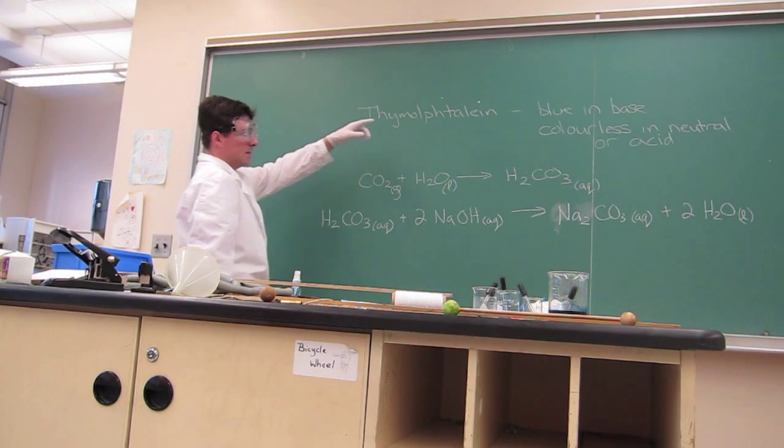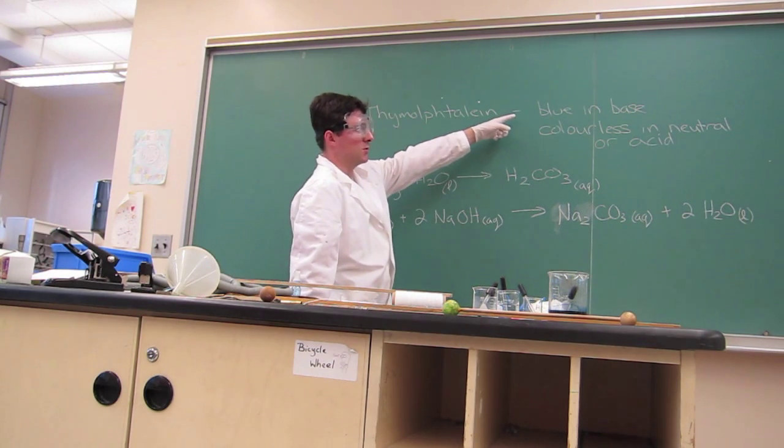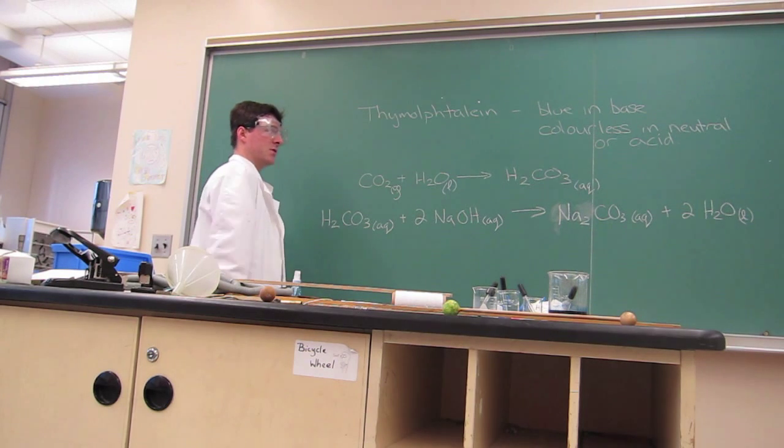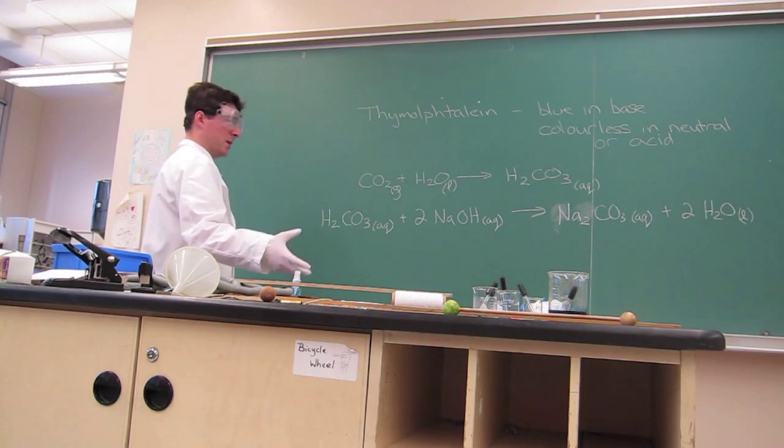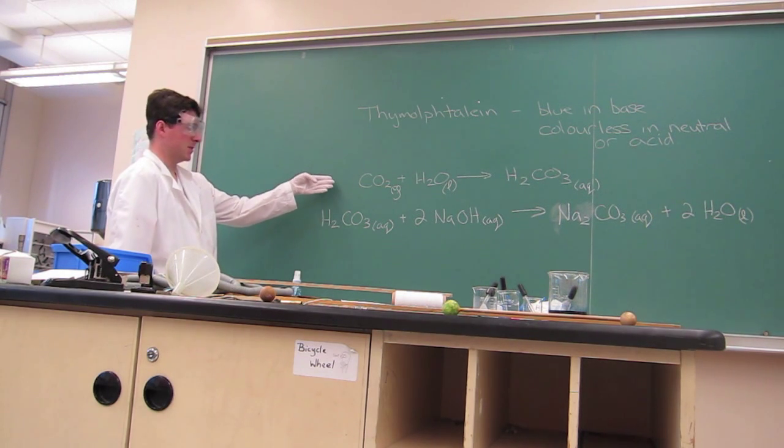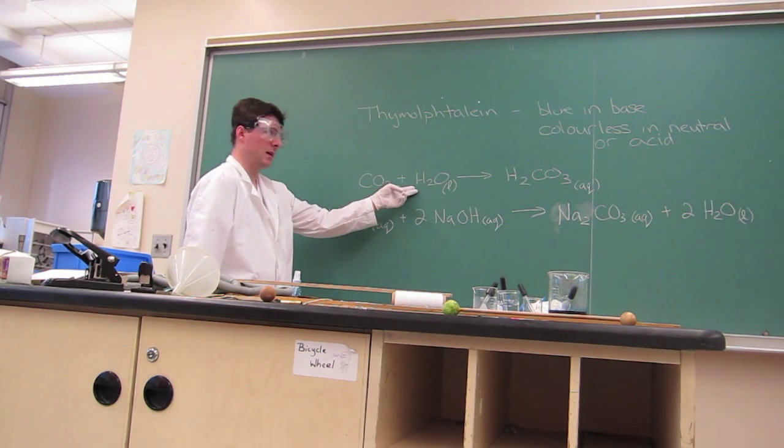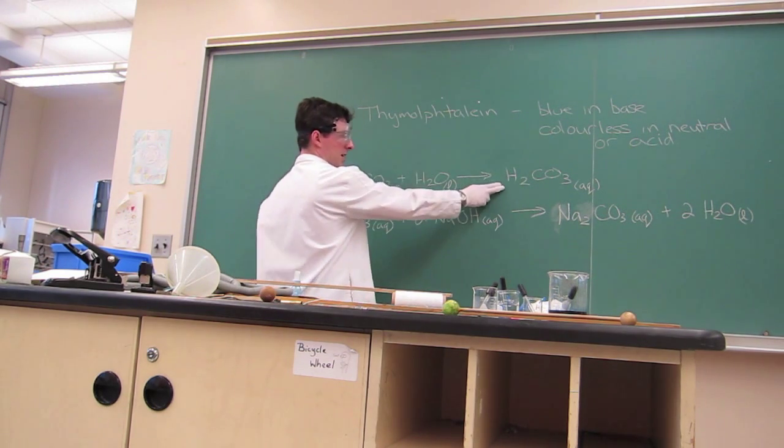The thymothaline is blue in a basic solution. So to the ink is added 20 drops of 3 molar sodium hydroxide solution. This keeps the ink blue to begin with. But as soon as the ink is applied to paper, carbon dioxide from the air can dissolve in the water in the ink. This produces carbonic acid.